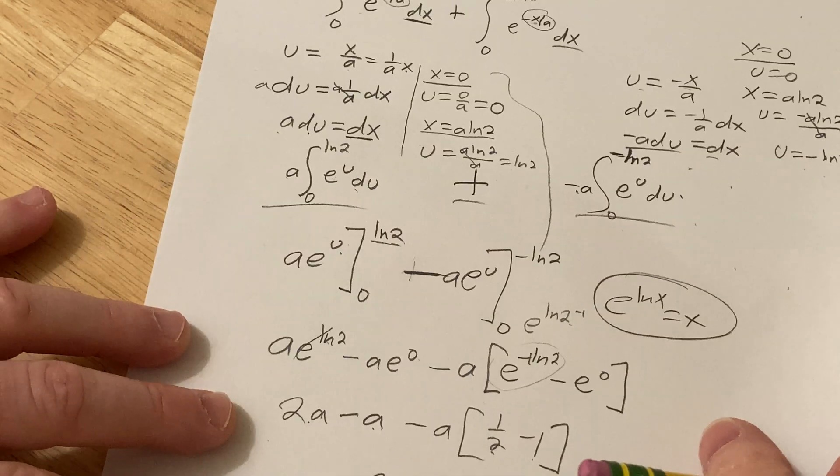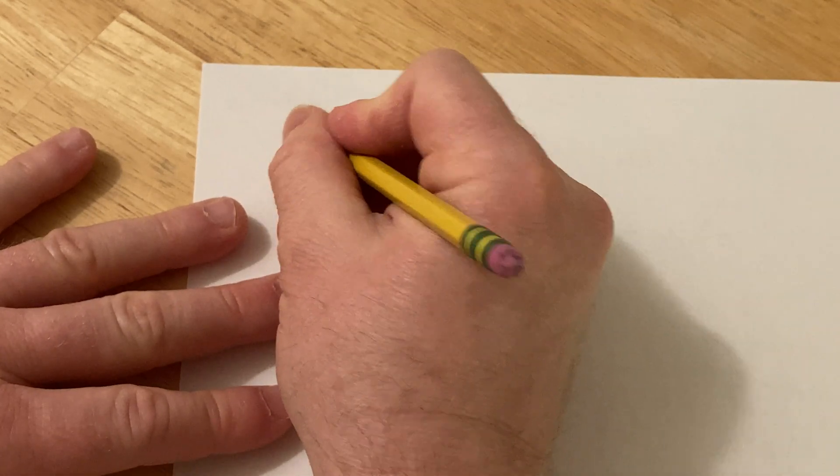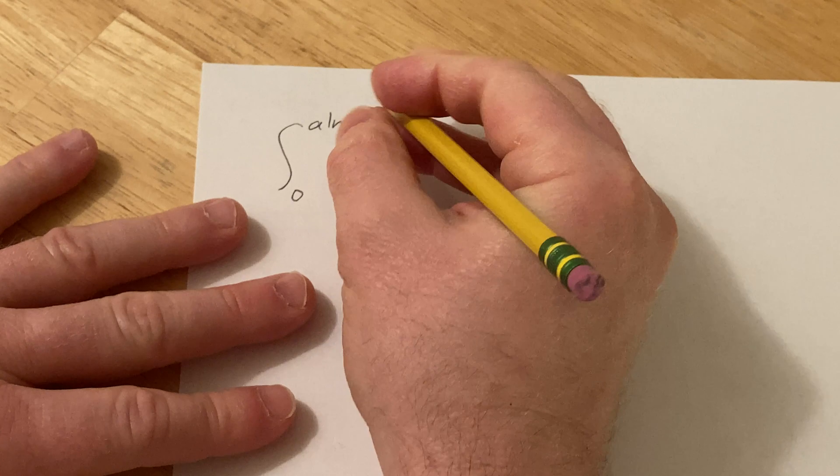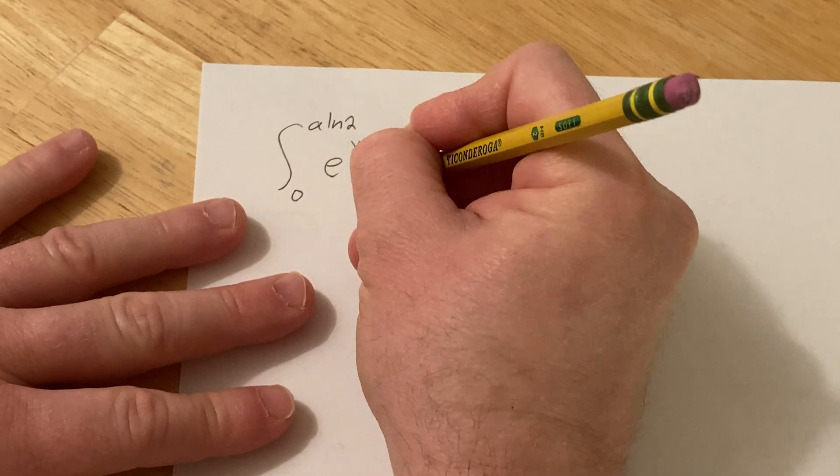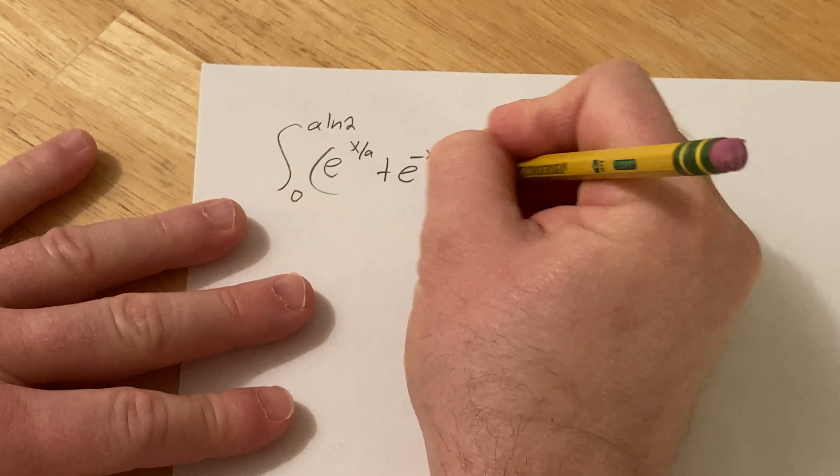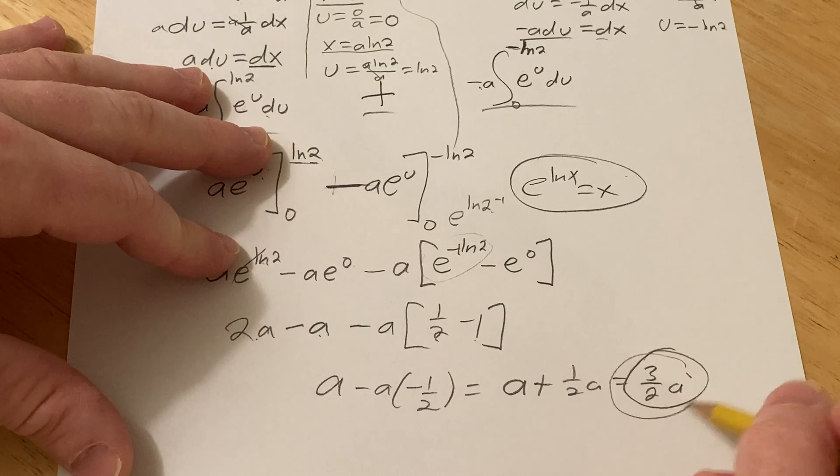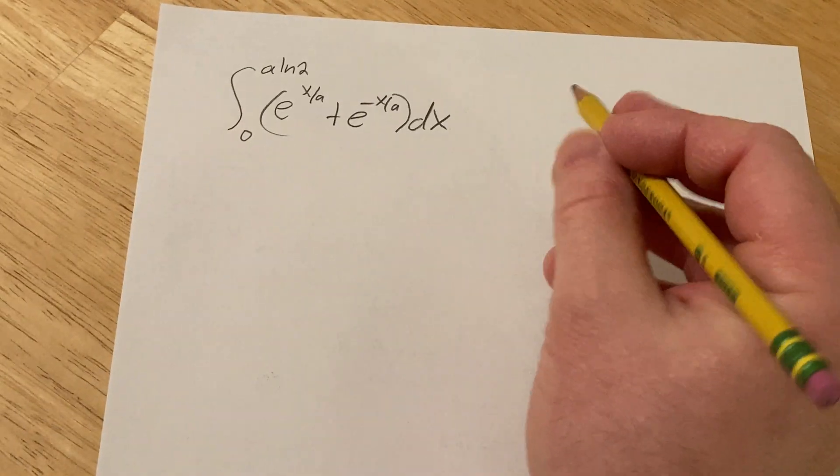I'm going to show you another way to do it really quick, a better way maybe. Let's try it a different way and see if we get the same answer. I'll do it a faster way to check our answer. When we did it this way, we got 3 halves a, right?